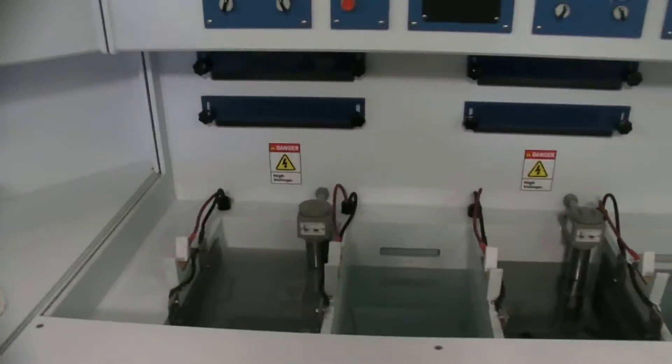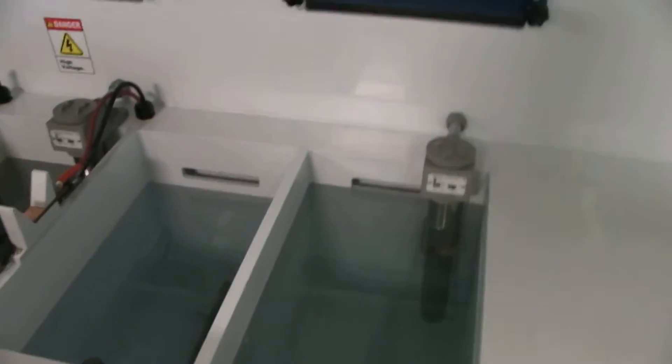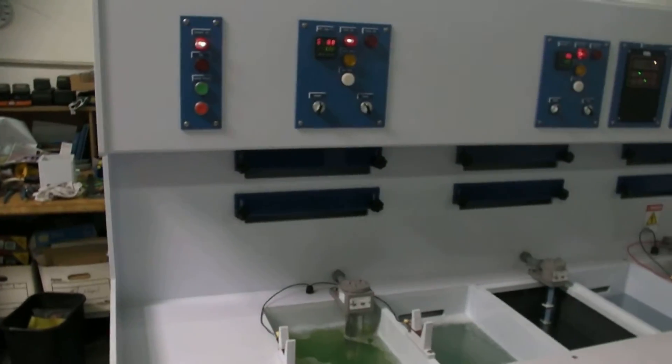And then we have two separate Type 2 anodizing tanks before the final rinse. The final rinse, of course, is just for maintaining clean parts to reduce spotting.